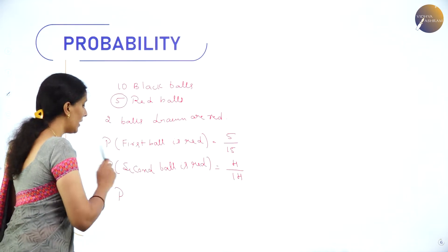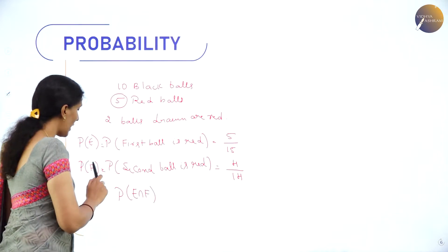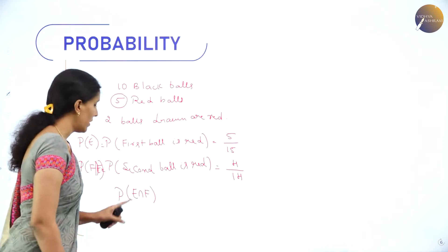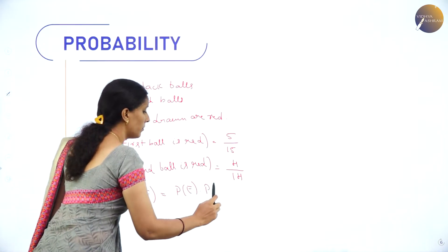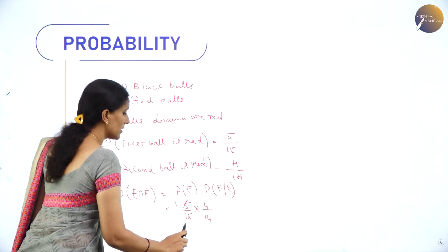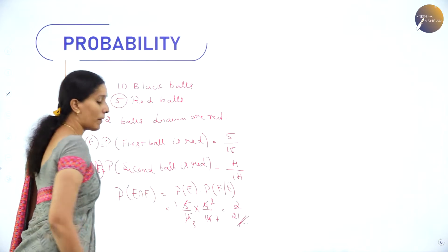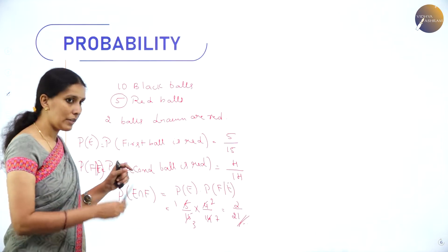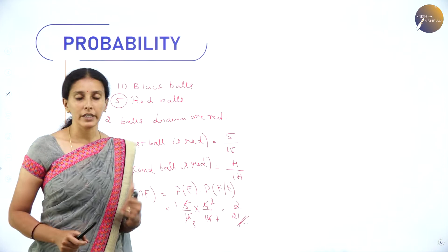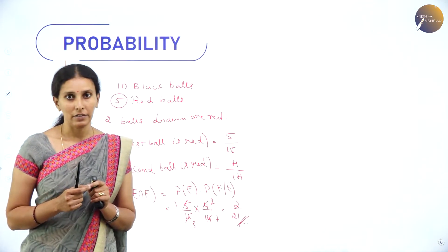Let P(E) = probability first ball is red and P(F|E) = probability second ball is red given E occurred. So P(E∩F) = P(E)·P(F|E) = 5/15 × 4/14. Cancelling gives 2/21. This is the probability of drawing two red balls simultaneously, illustrating how the multiplication theorem finds the occurrence of two simultaneous events.